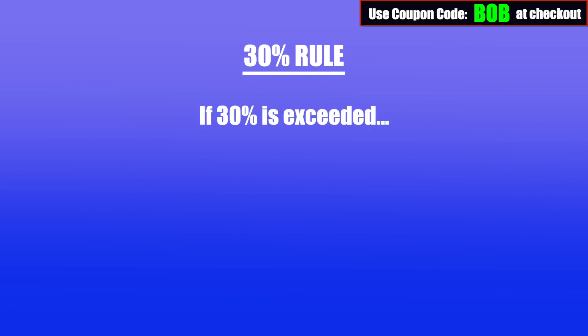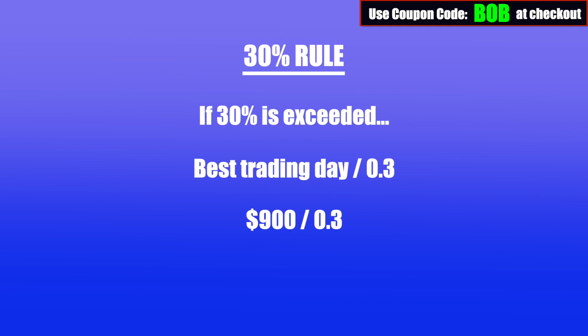At any time, if you do exceed 30% and want to find out how high your current P&L needs to be, simply divide your best trading day by 0.3. So if your best trading day is $900, take 900 divided by 0.3, which equals $3,000 — meaning your P&L has to be at least $3,000. If you have questions, leave them in the comments below. Again, this rule will no longer apply after your fourth month of withdrawals.